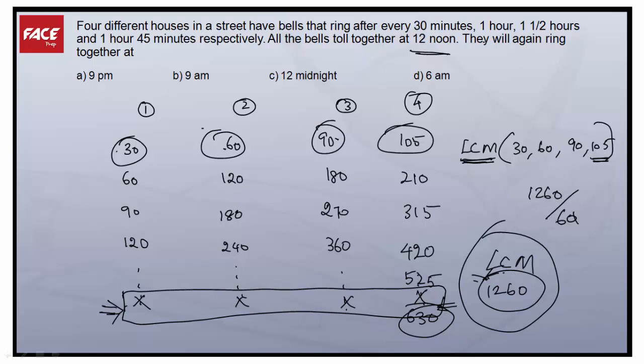So 1260 minutes is how many hours? We'll divide by 60. So when I divide by 60, it will be 21 hours. So 21 hours from 12 noon, all the four bells will ring together, which is 9 a.m., option B. Because 24 hours will be the next day 12 noon. Minus 3 hours will be 21 hours, which is 9 a.m. So the answer will be option B. Basically, this question is a simple LCM question.